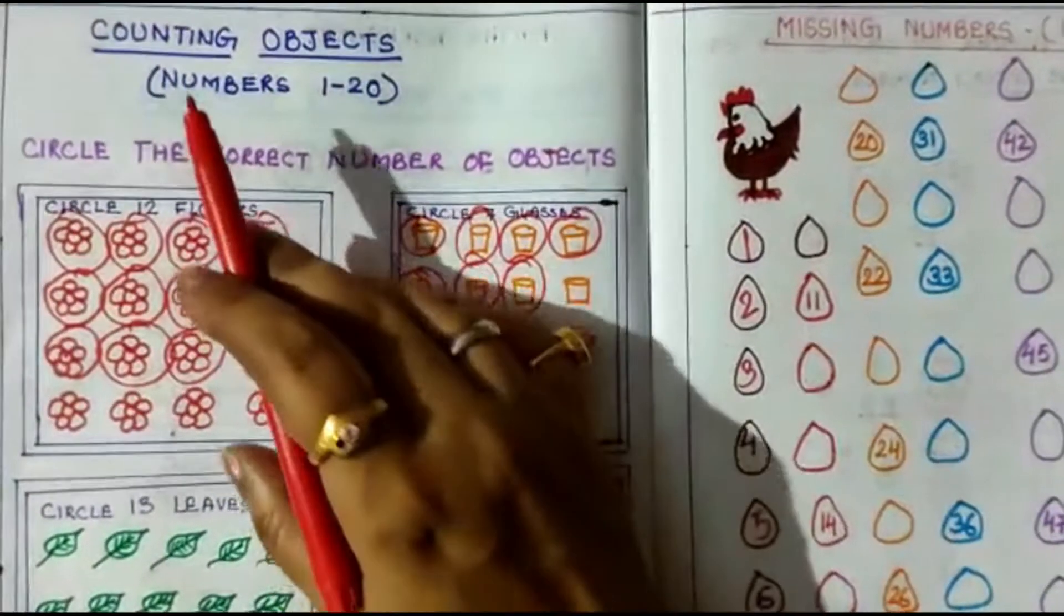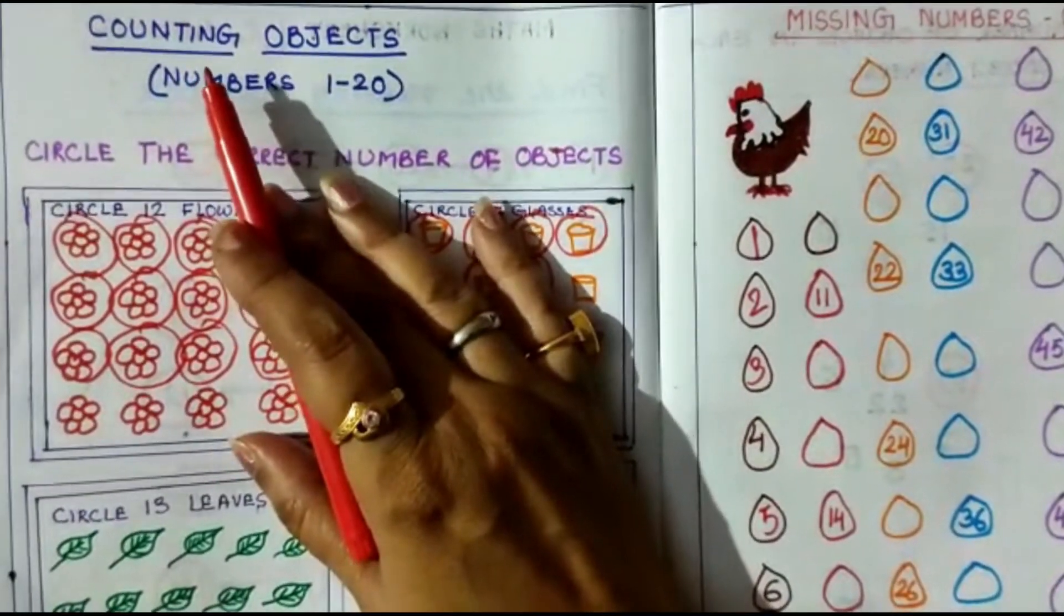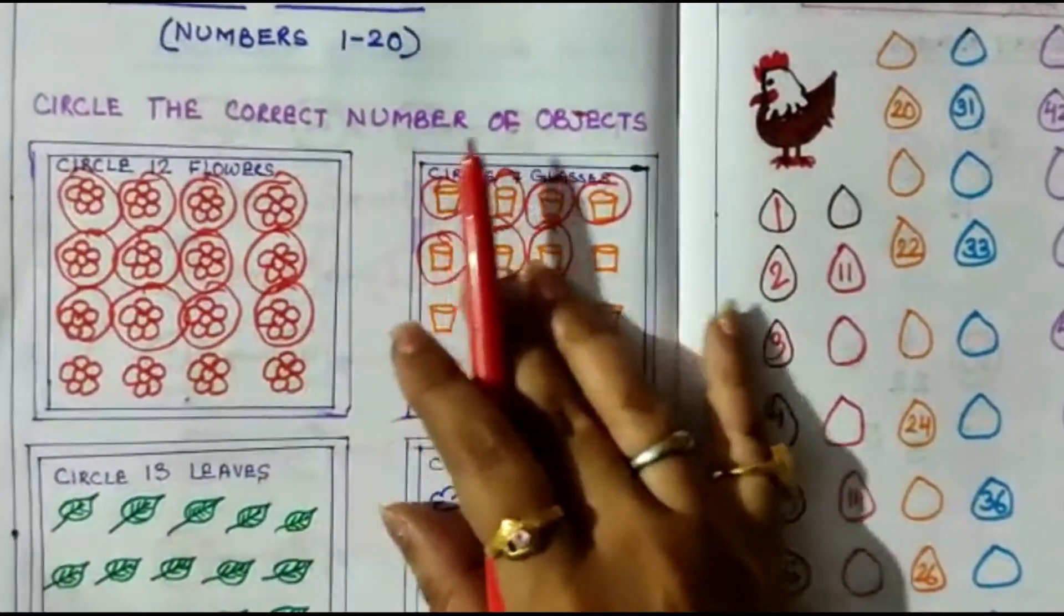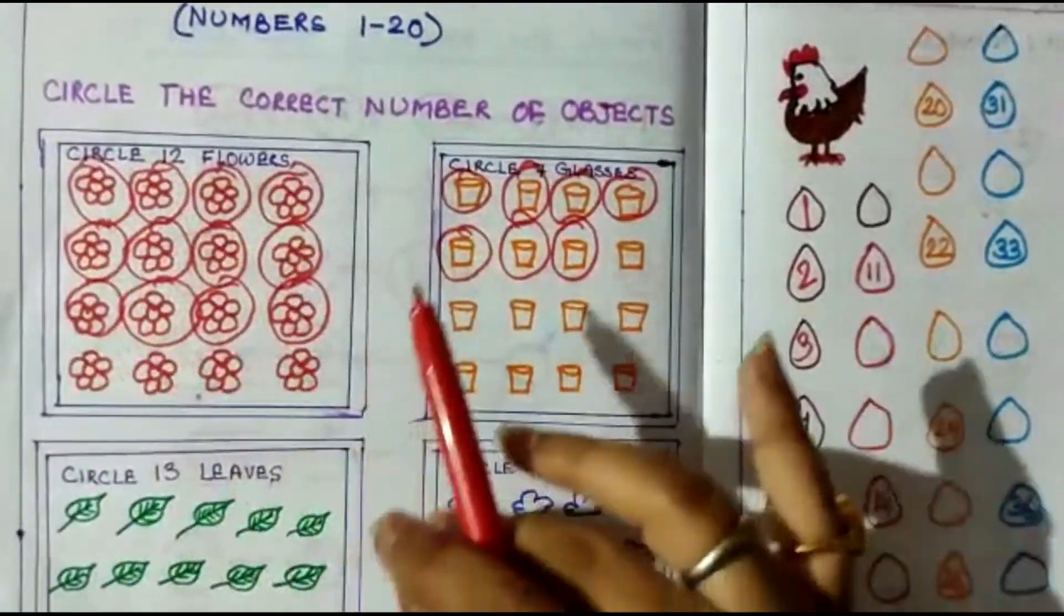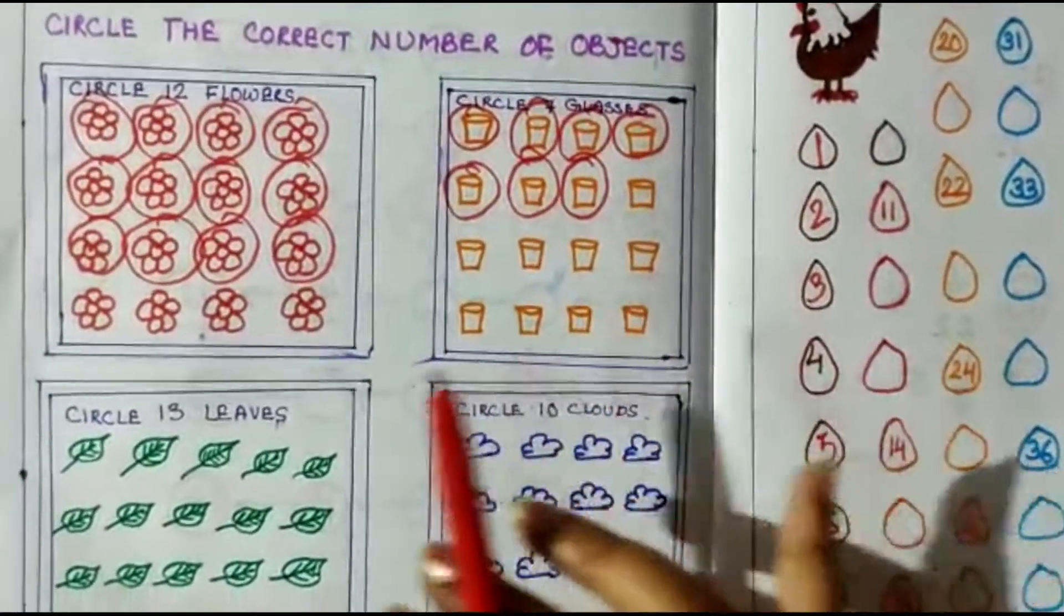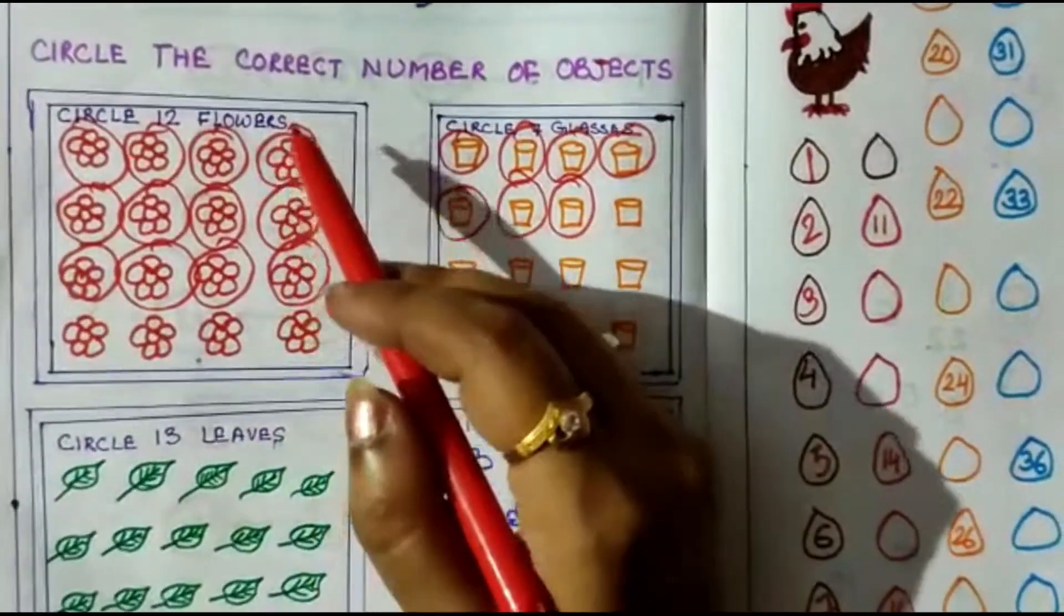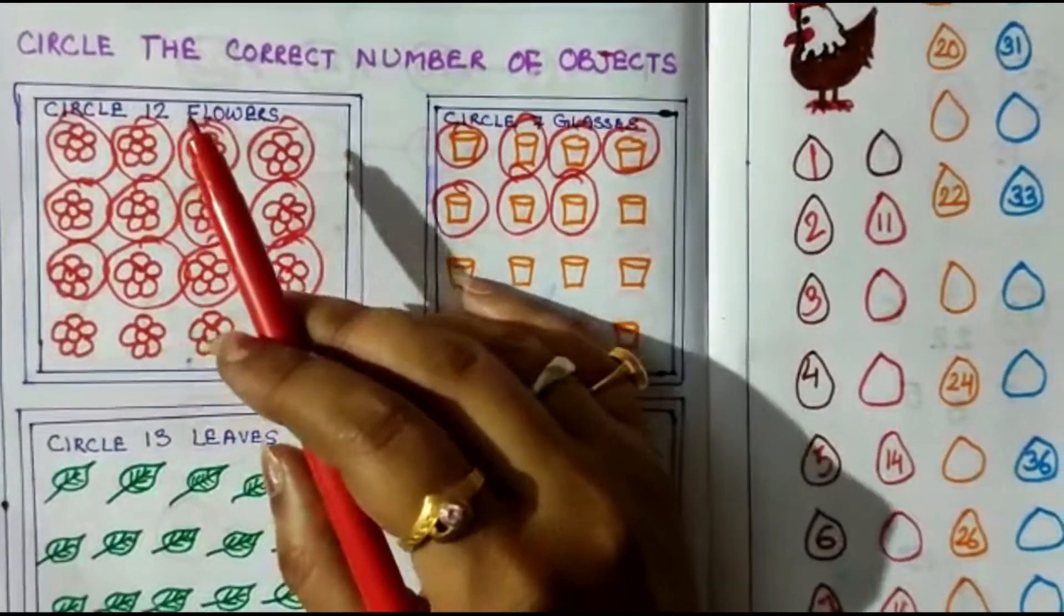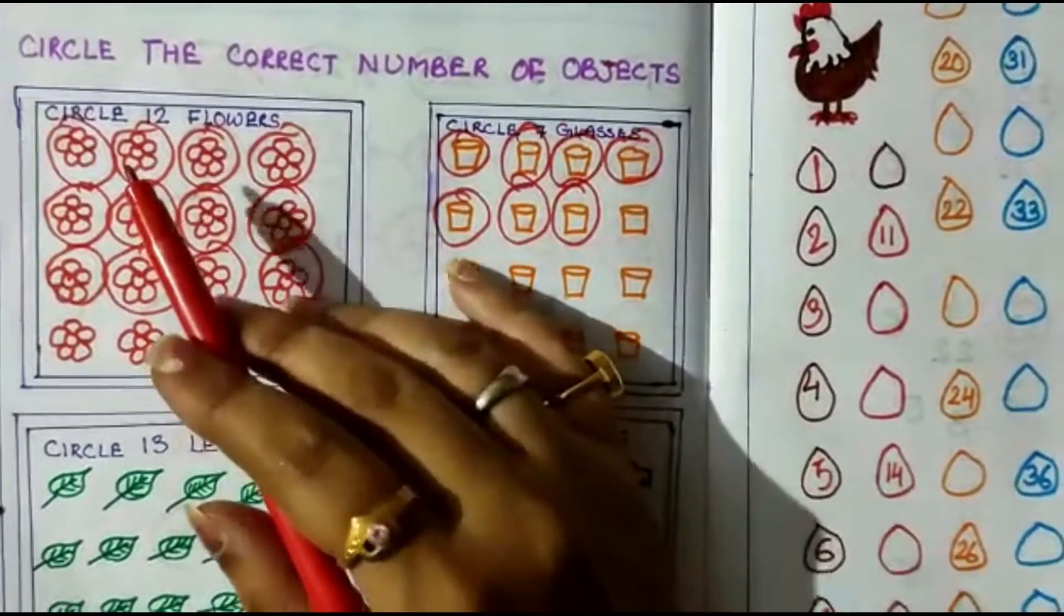Next worksheet is also based on counting. This is counting objects, numbers 1 to 20. Circle the correct number of objects. Here I have made square boxes, and in boxes I have made different types of objects. See the first one in this box: circle 12 flowers. So I have made here some flowers.